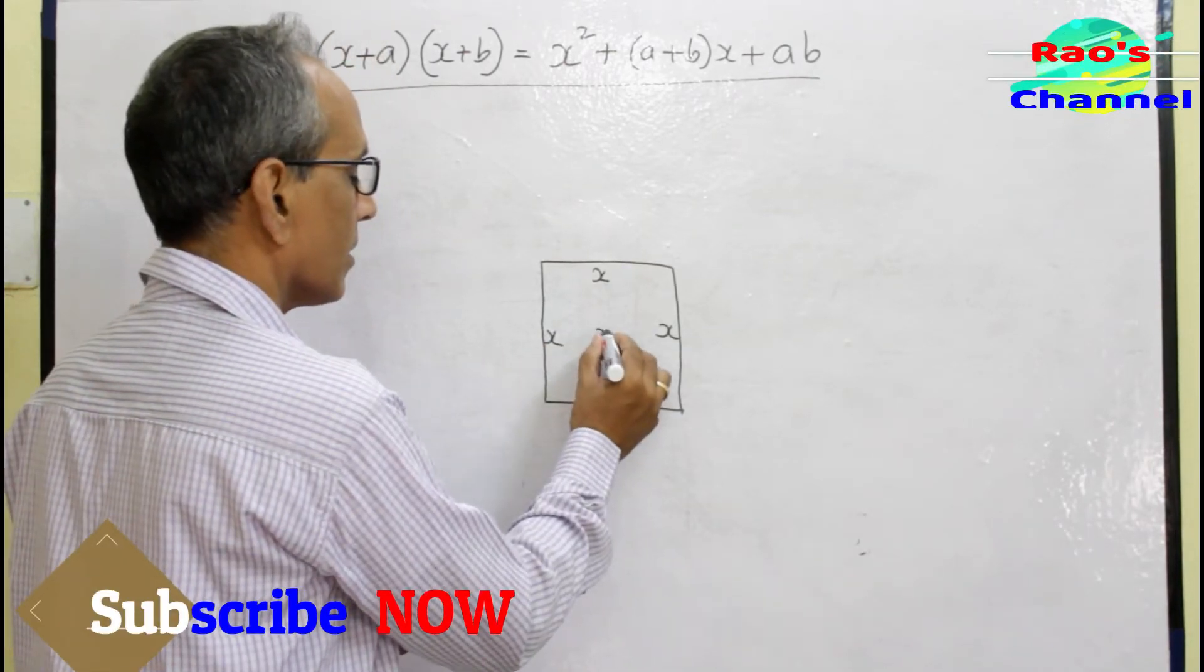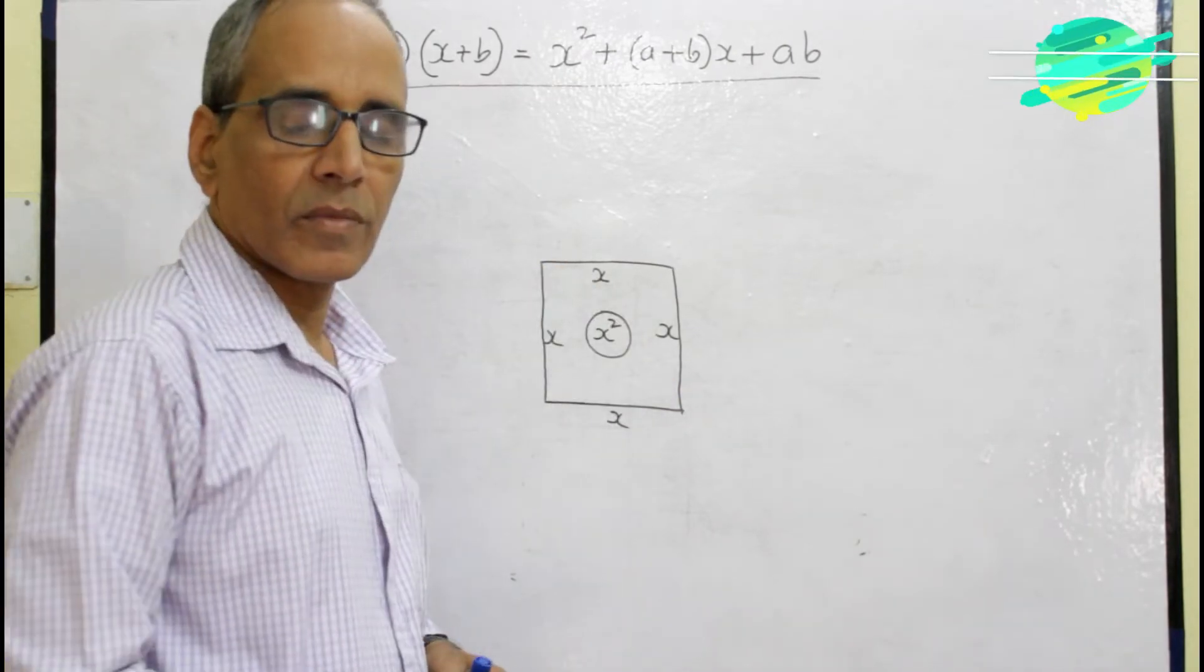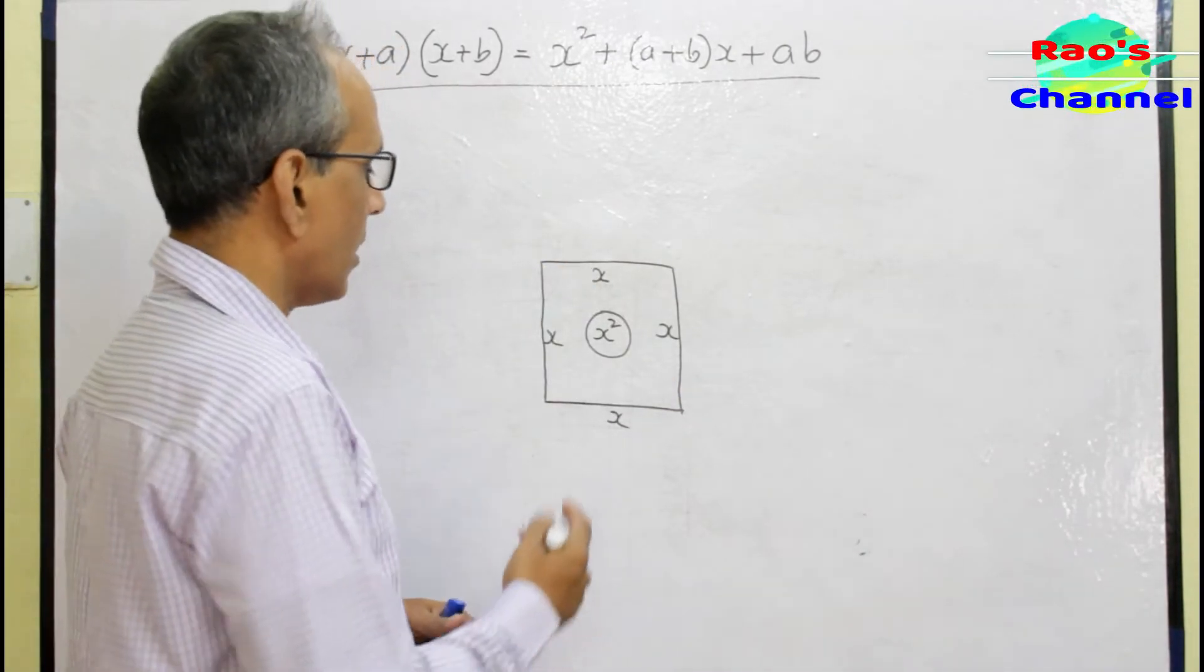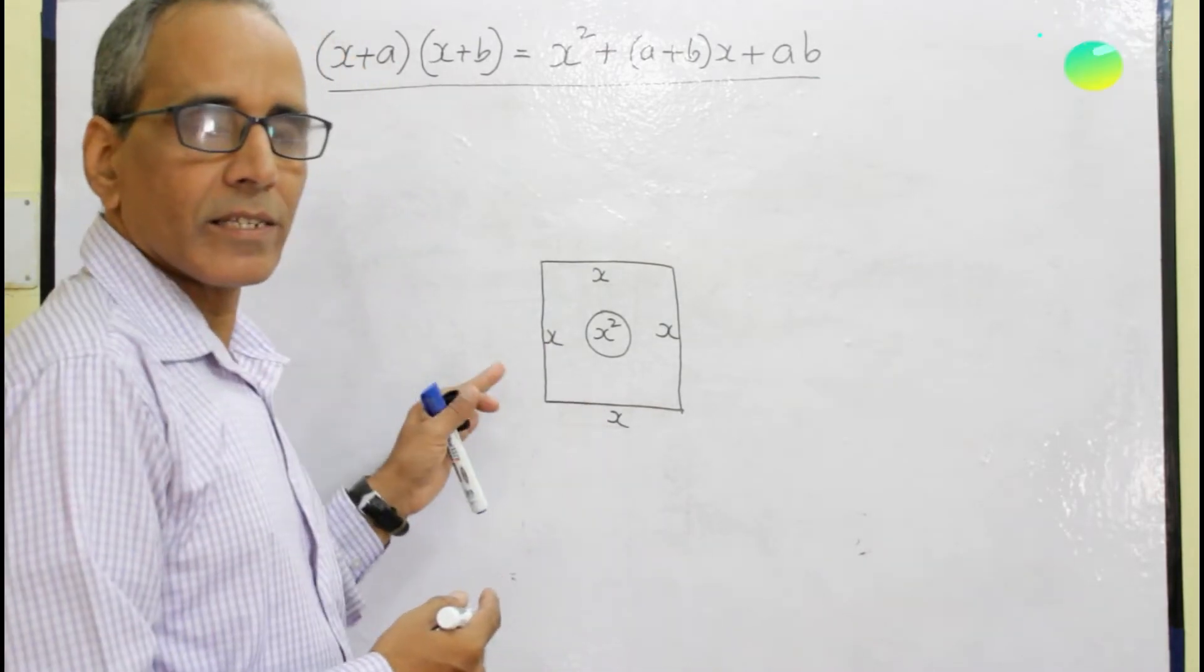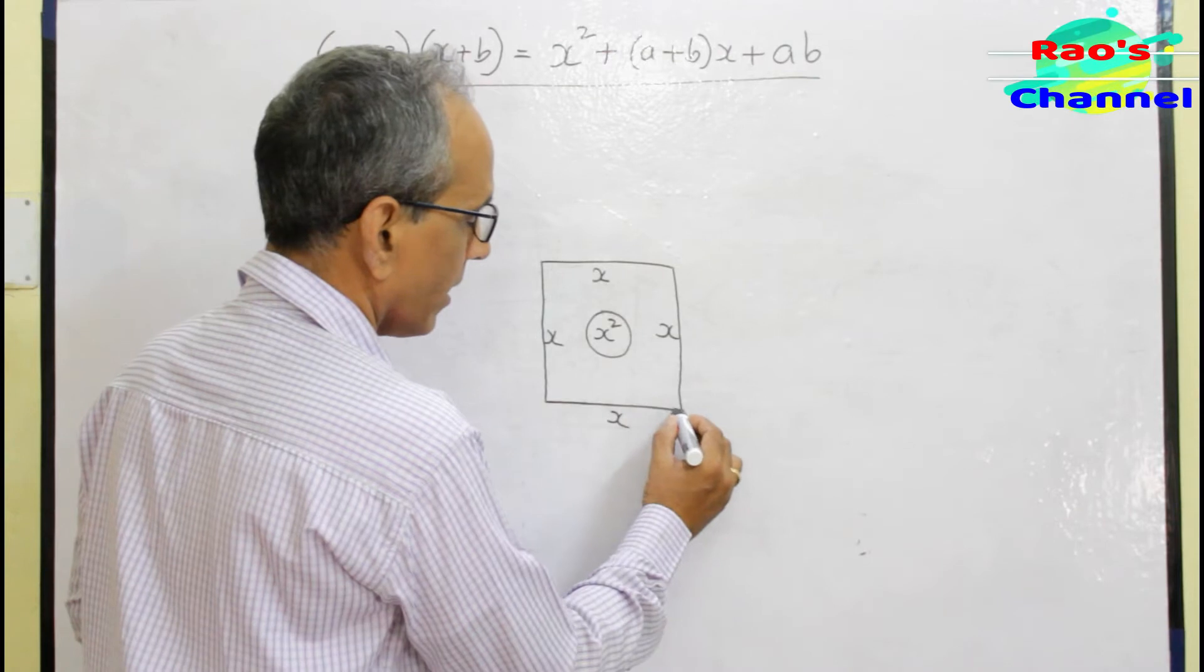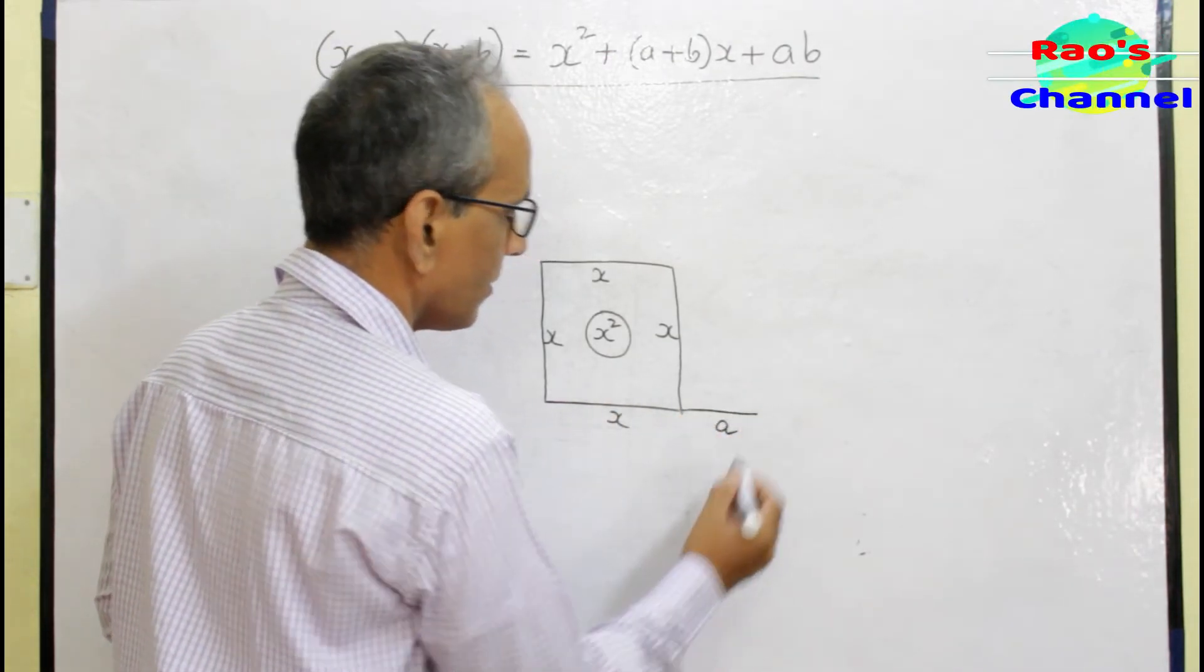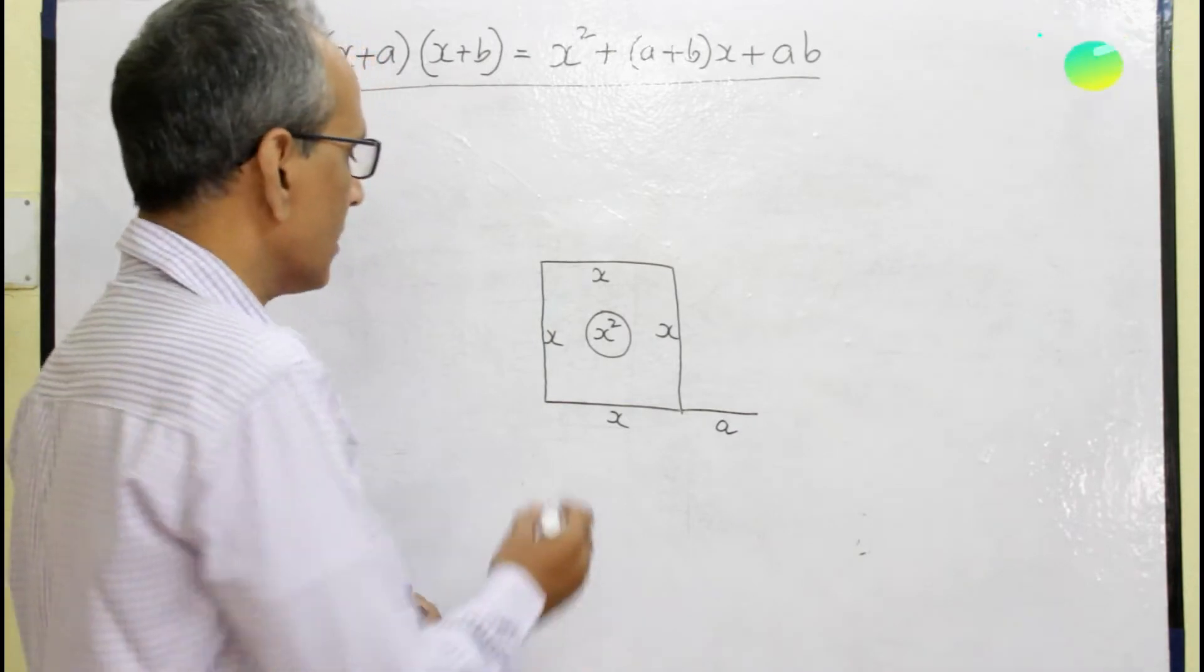So I increase the adjacent sides of this square. I increase this side by a units, whereas the adjacent side by b units - not the same extension, different. This is b units.